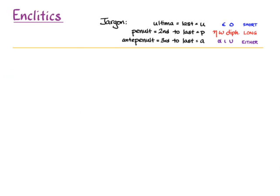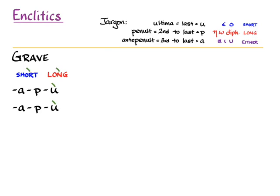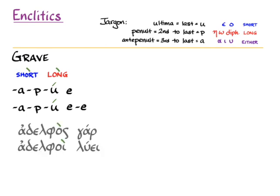Let's see what happens with graves. Graves appear on the last syllable of a word when another word immediately follows. But when you add an enclitic after a word that ends with a grave, it's as if the word keeps going, so there is no new word starting immediately afterwards. What happens is that grave turns back into an acute. So we see 'adelphos gar' with a grave there because a word follows immediately, or 'adelphoi ge.' But when we put an enclitic afterwards, those accents change back to acutes.